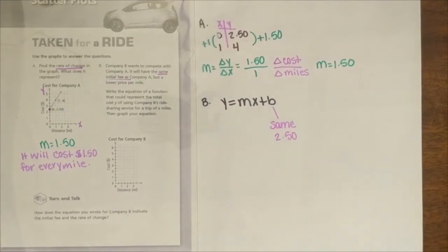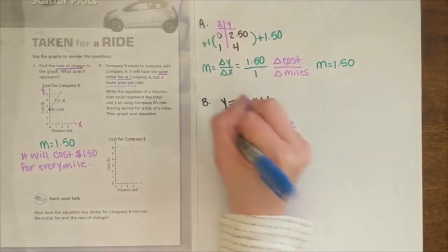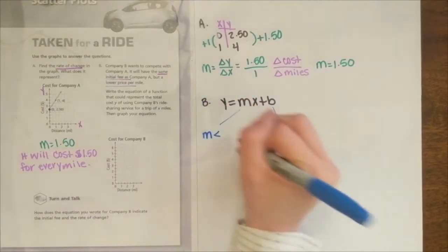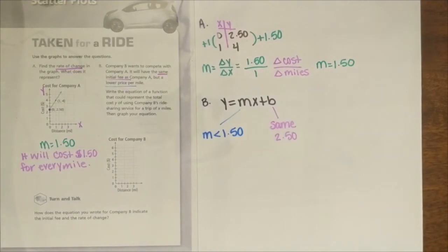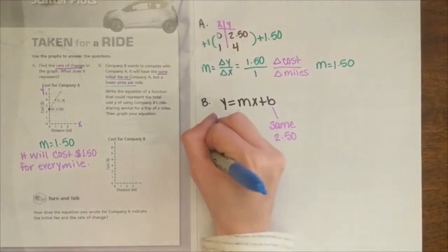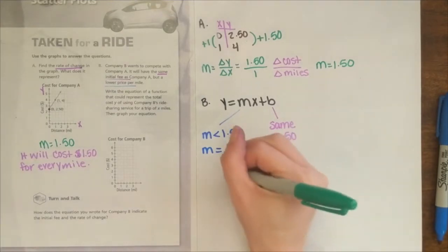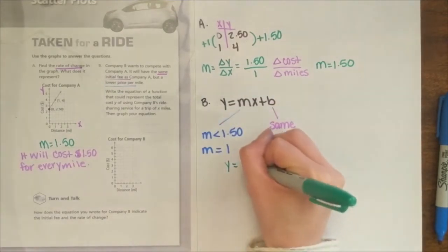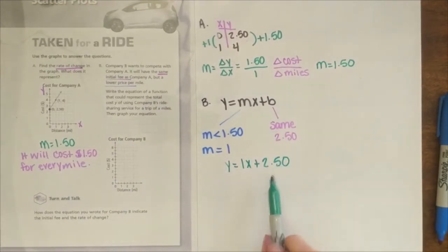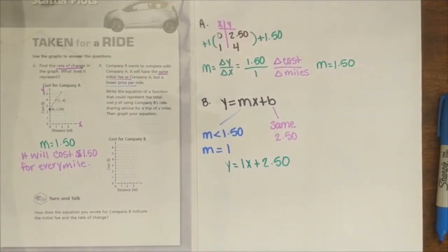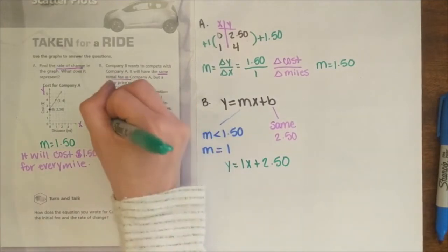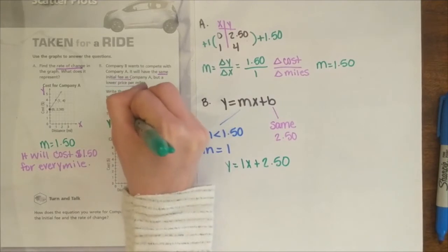Now, it says that they want a lower price per mile for our slope. Earlier, we found that the slope of Company A is $1.50. So we know that we want our m, your slope, to be less than $1.50. Anything that satisfies that inequality will make this true for problem B. I'm going to choose my slope to be equal to 1. I'm going to charge $1 for every mile taken with the ride-sharing service. Now, we can use this information to create our equation in slope intercept form. So we have y equals m, which I chose to use 1, x plus $2.50. Our initial fee is $2.50, and I'm charging $1 per mile taken by the company. So our equation for Company B is y equals 1x plus $2.50.